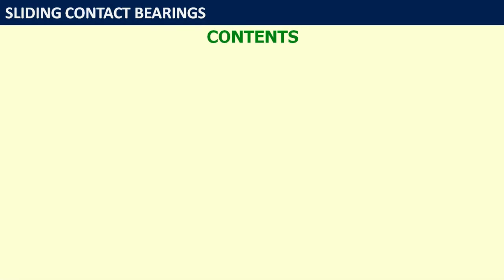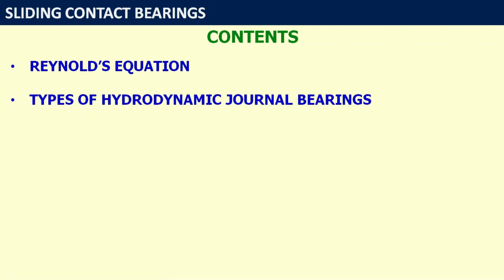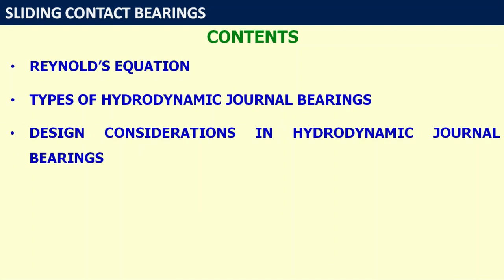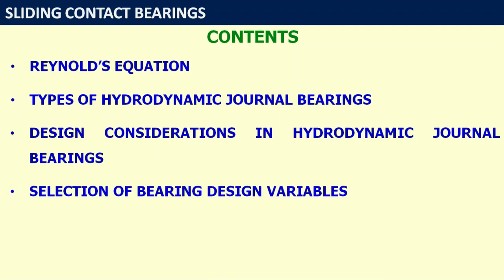Welcome to this presentation. In this lecture, we will discuss assumptions in Reynolds equation, then derivation of Reynolds equation for two-dimensional and one-dimensional flow, then different types of hydrodynamic journal bearings based on L by D ratios, design variables and performance variables for hydrodynamic journal bearings, and finally selection of design variables for hydrodynamic journal bearings. The contents of this lecture are: Reynolds equation derivation, types of hydrodynamic journal bearings, design considerations, and selection of bearing design variables.